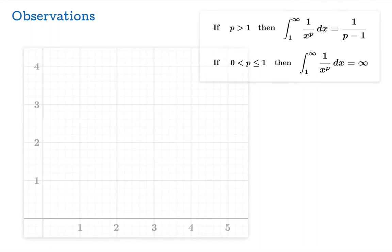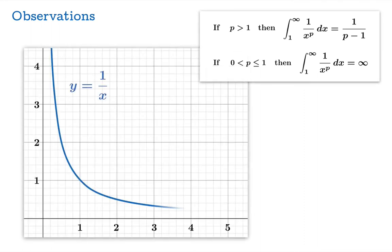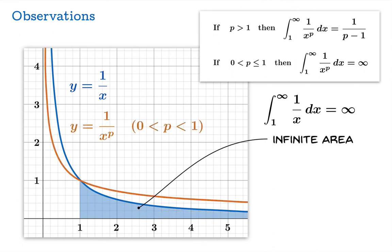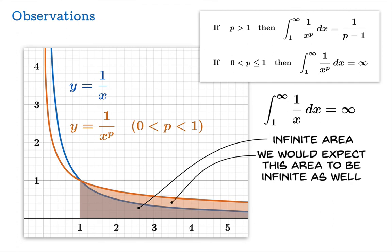Let's end with a few observations. Going back to the case p equals 1, the reciprocal function — we showed that integral diverges to infinity, so that area is infinite. If p is between 0 and 1, the graph lies above the reciprocal function to the right of x equals 1, so we'd expect that area to be infinite as well, since it encloses an area already known to be infinite.